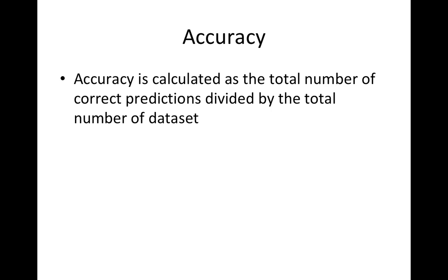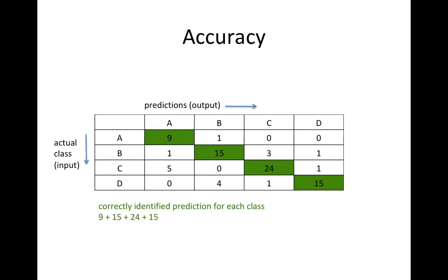Now we can talk about one of the measures here: accuracy. Accuracy is calculated as the total number of correct predictions divided by the total number of the data set. So here is the example — we have 9, 15, 24, and 15 as true positives, and we divide by the total data set.